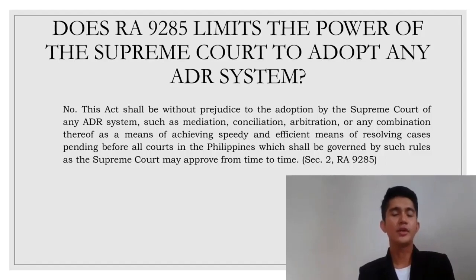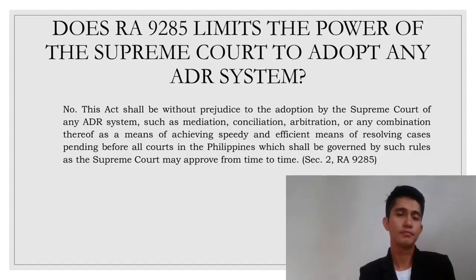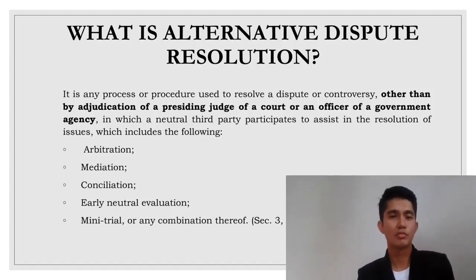Take note that under Republic Act 9285, it does not actually limit the power of the Supreme Court, or the Court of Last Resort, to adopt the alternative dispute resolution system such as mediation, conciliation, arbitration, or any combination thereof. Alternative dispute resolution is any process or procedure used to resolve a dispute, conflict, or controversy other than adjudication by a presiding judge of a court or an officer of a government agency, as defined in Republic Act 9285. In alternative dispute resolution, there is a neutral third party that will help the parties resolve the case.